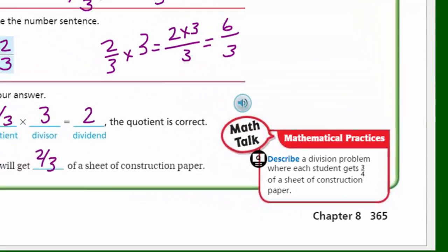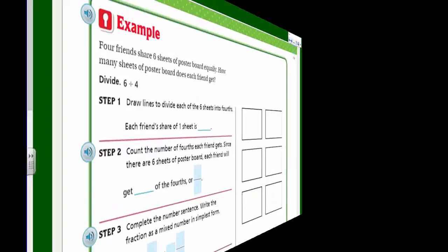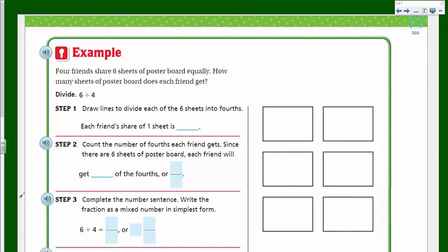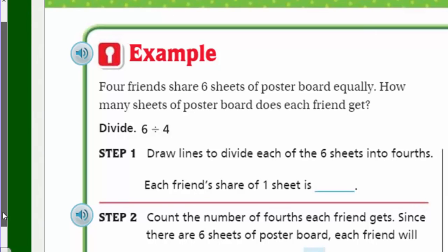It's time for page two. What do we have here? Example. Four friends share six sheets of poster board equally. How many sheets of poster board does each friend get? Now, remember, we're going to divide six divided by four, because six is the number of sheets of poster board we have, and that becomes the dividend. We're going to divide it by four, because it says that four friends are going to share that amount. So, that becomes our divisor.